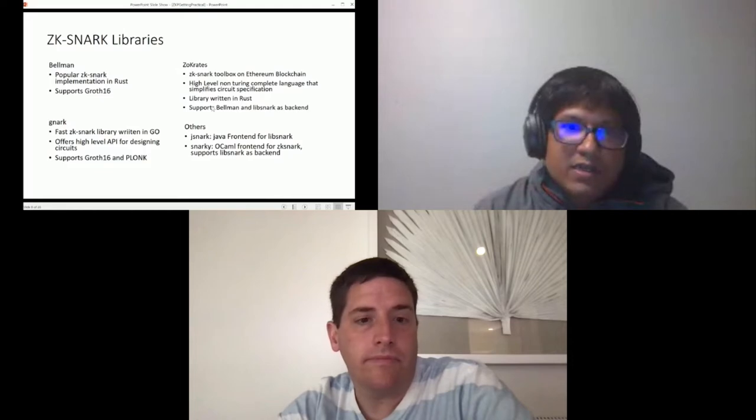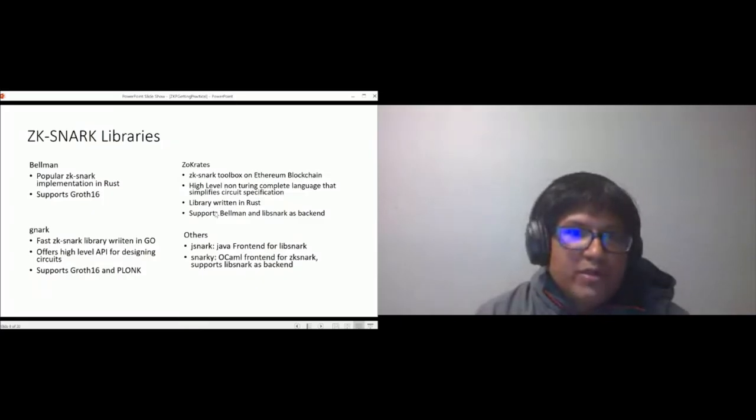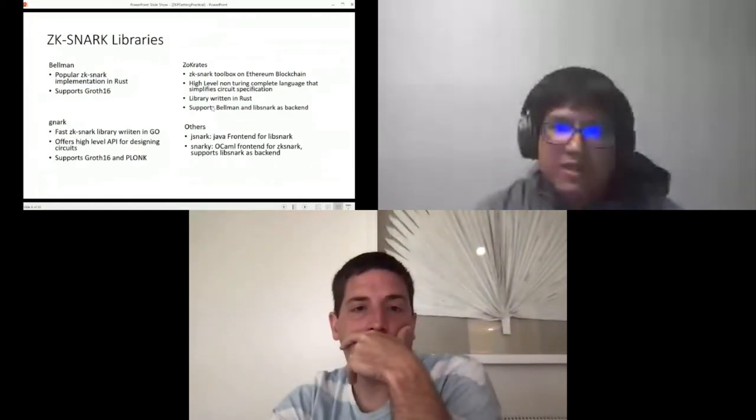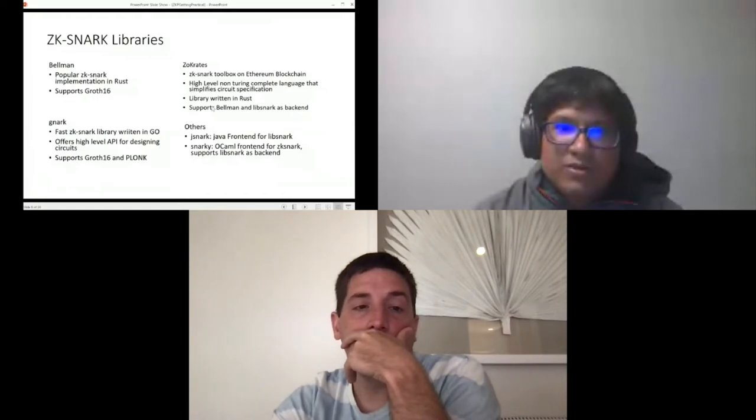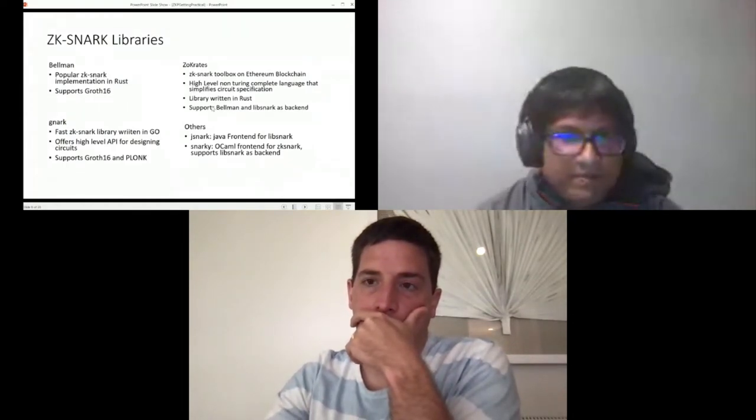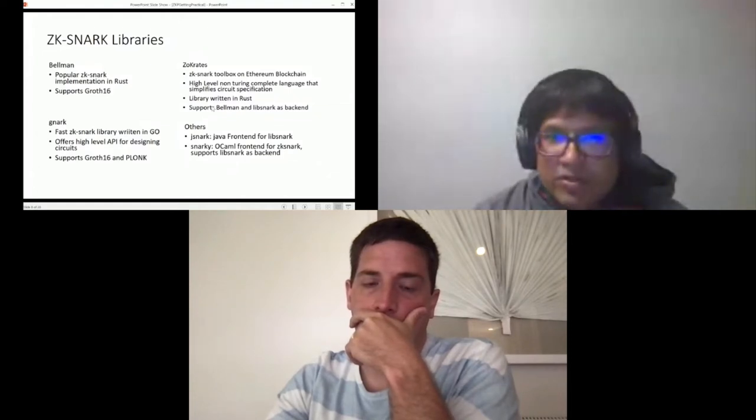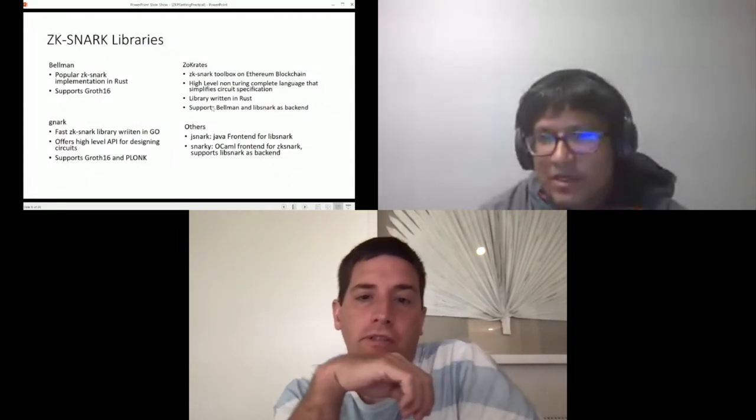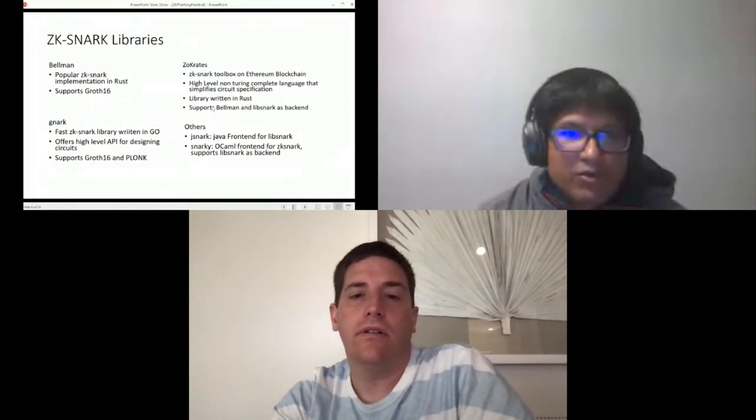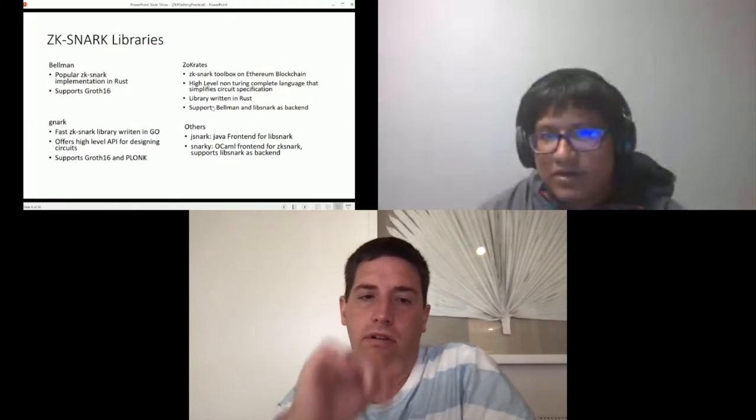We also have other zk-SNARK libraries such as Bellman which is a popular zk-SNARK integration in Rust and supports BLS12-381, and this is actually getting used in Zcash. Then there is Zocrates, a zk-SNARK toolbox on Ethereum blockchain. It gives a high-level non-Turing complete language that simplifies the circuit specifications, because if you're using Bellman or libsnark you pretty much have to deal with the R1CS circuits. This library is also written in Rust and it supports Bellman and libsnark as backends. There is also Gnark which is a fast zk-SNARK library written in Go. This also offers some very high level APIs. And there are also others: jsnark, snarky, etc.